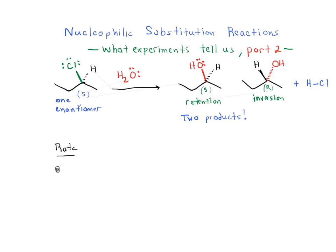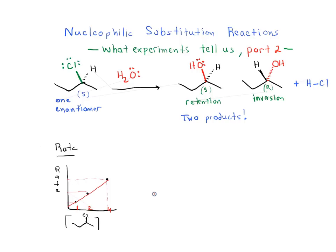Let's analyze the rate of this reaction. If we keep the concentration of water constant and change the concentration of 2-chlorobutane, we find that as we double the concentration of 2-chlorobutane the rate doubles, and if we quadruple the concentration the rate quadruples. So this reaction is first order in 2-chlorobutane, which we call our substrate or electrophile.